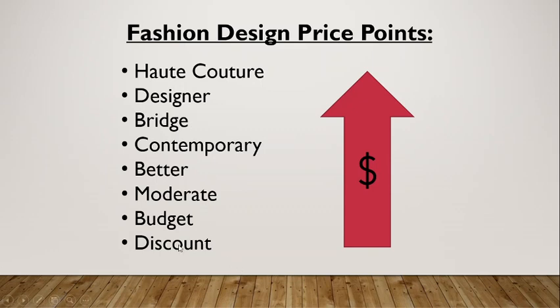They go from least expensive to most expensive. They're not set in stone — there are approximate price ranges that we're going to assign dollar amounts to, but they're by no means fixed. These are loose labels put on general price ranges. There's lots of overlap where, for example, the most expensive garment in moderate might even be more expensive than something in contemporary or better that would be considered very cheap for that category.